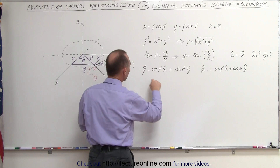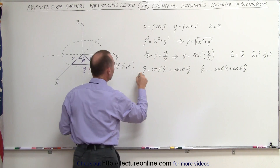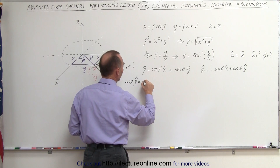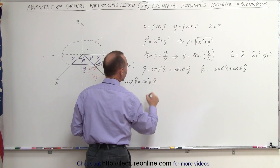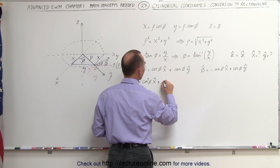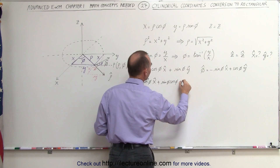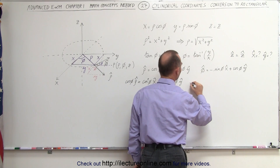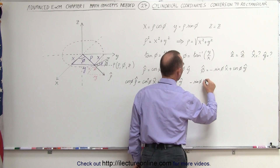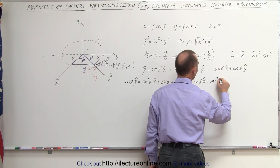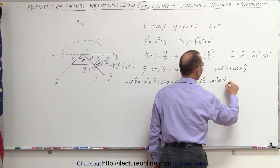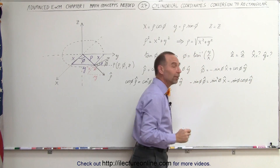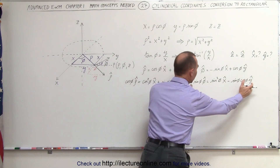Watch what we're going to do. We're going to multiply every term in the rho equation by cosine of phi, which means this becomes: cosine of phi times rho unit vector equals cosine squared of phi times the x unit vector plus sine of phi times cosine of phi times the y unit vector. Then we multiply the phi unit vector equation by negative sine of phi, so this becomes: negative sine of phi times the phi unit vector equals positive sine squared of phi times the x unit vector minus sine of phi times cosine of phi times the y unit vector.